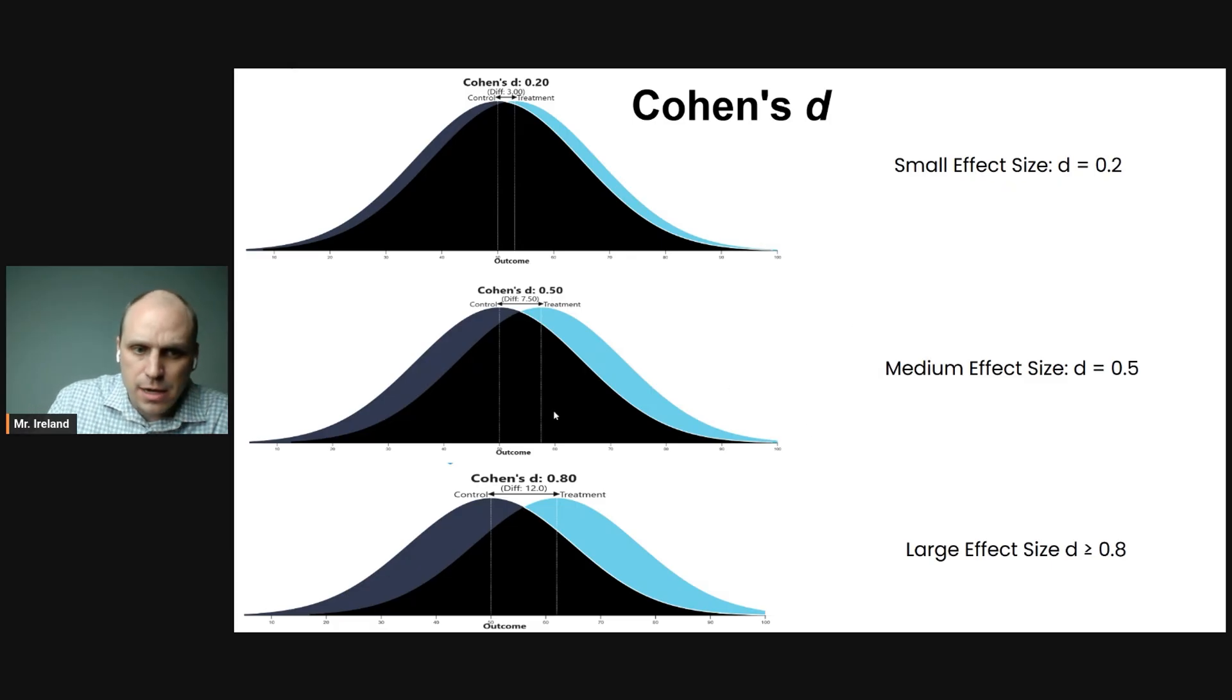A medium effect size is equal to D equals 0.5, and you can see that the means or the averages are a little bit more spread apart. And then a large effect size would be D is equal to or greater than 0.8. And you can see that the averages of these two curves here are farther and farther apart. For each of these, the blue curve is the treatment group and the black curve is the control group.